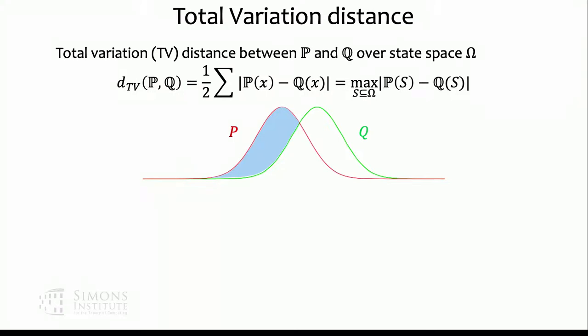Equivalently, the TV distance can be defined as: find a subset of the state space — an event in the probability space — look at the probability of that event in p and in q, take their difference, and find the event that maximizes the difference. This also equivalently defines the total variation distance. Note that omega is always a finite, discrete set.